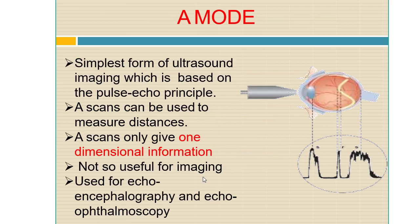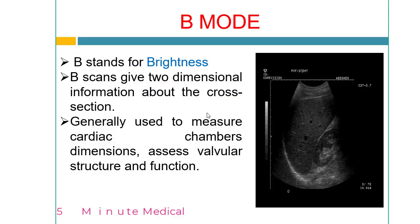A-mode is the simplest mode of ultrasound, based on the pulse-echo principle. A-mode ultrasonography is used to measure distance only — it provides only one-dimensional information, so it is not used for imaging. It is typically used in echo encephalography and echophthalmoscopy, sometimes in ophthalmology.